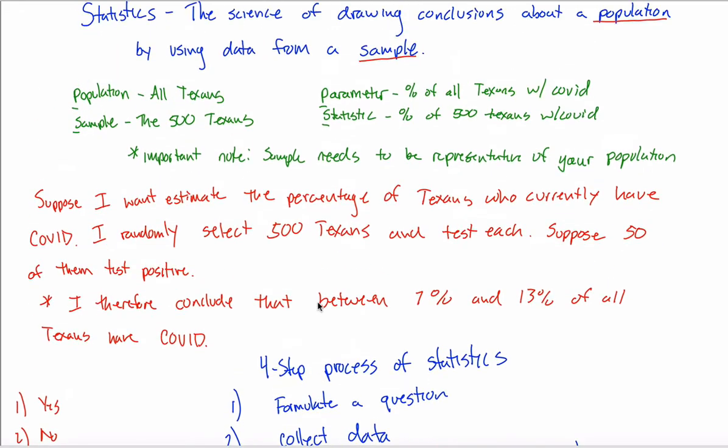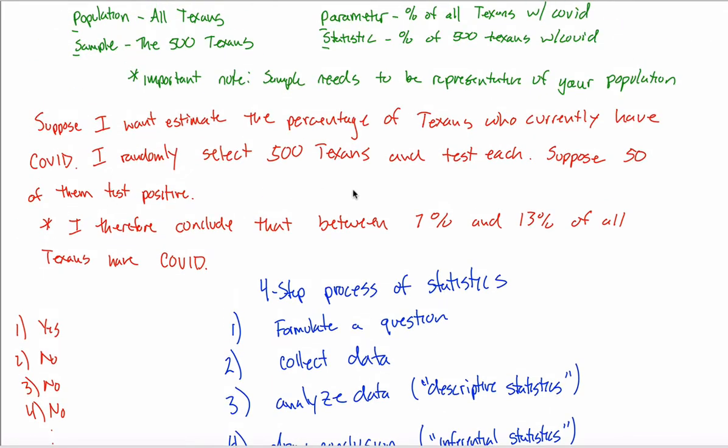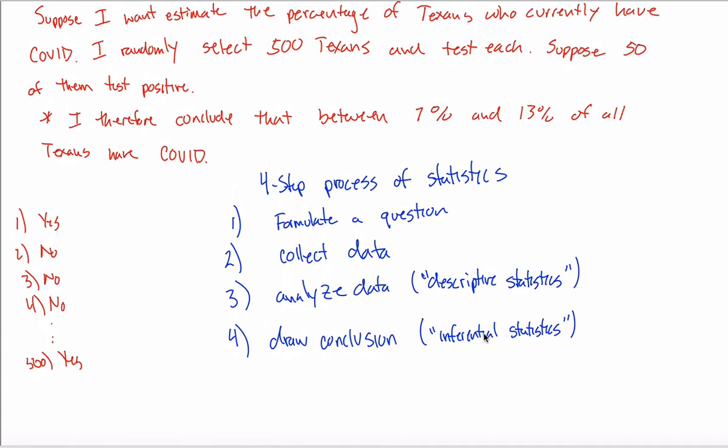You're making inferences. Because 10% of my sample had COVID, I'm concluding that between 7% and 13% of my population has COVID. I'm making an inference about the population based on data that I have about the sample.